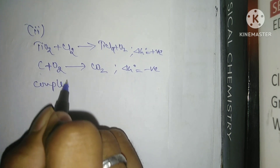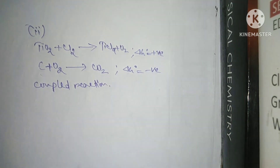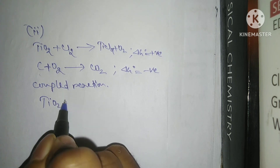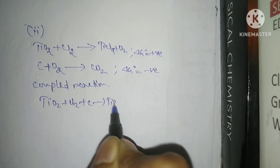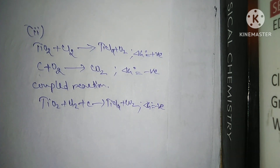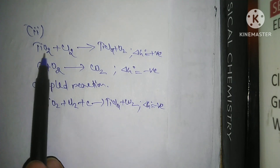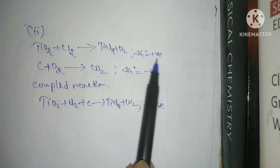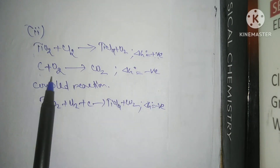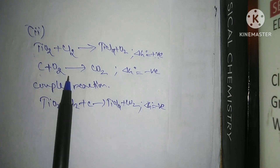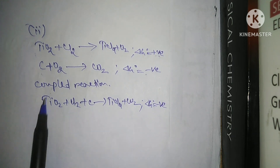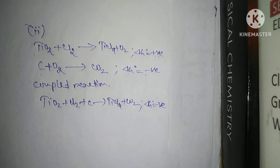Coupling these two reactions increases the overall spontaneity. The coupled reaction is: TiO2 + Cl2 + C → TiCl4 + CO2, and the overall Gibbs free energy change is negative — making it exergonic and spontaneous. The first reaction alone was non-spontaneous because it had a positive Gibbs free energy, but by coupling it with the exergonic carbon combustion reaction, it becomes spontaneous.